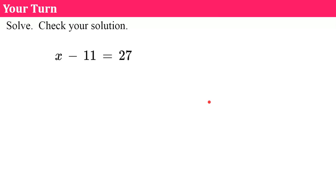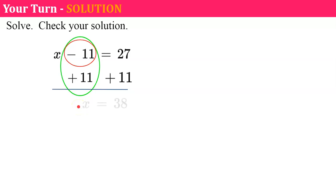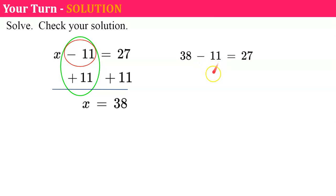Here's another one — please pause, solve, don't forget to check your solution, and come back when you're done. Welcome back. We identify what is happening to x, which is subtract 11. The inverse of subtract is to add 11 to both sides, giving me a zero pair. So x is equal to 27 plus 11, which is 38. Let's check: replacing x with 38, 38 subtract 11 is 27. It checks.